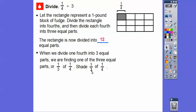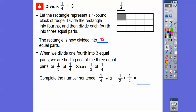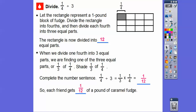In math, 'of' means multiply, so one-third of one-fourth is the same as one-third times one-fourth. Complete the number sentence: one-fourth divided by three is the same as one-third times one-fourth. That little piece — that's how much each friend gets — gives us one out of 12, which is one-twelfth. So each friend gets one-twelfth of a pound of caramel fudge.